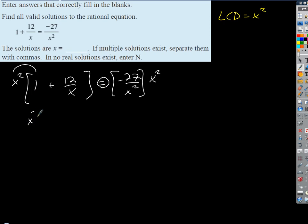If I distribute the x squared, I get x squared plus here I get 12 x squared over x. Well, x squared over x simplifies to just 12x, and then on this side the x squareds cancel and I would just get negative 27.